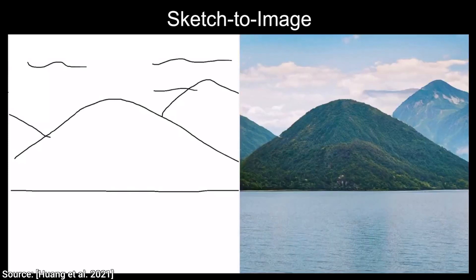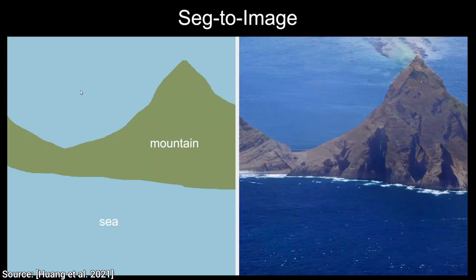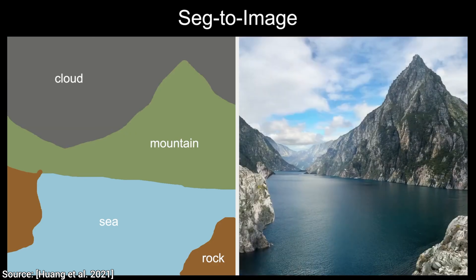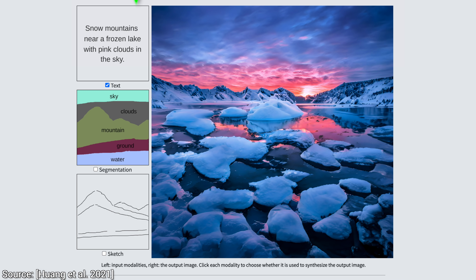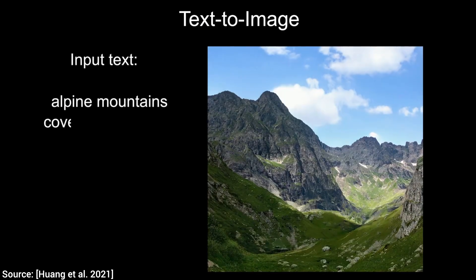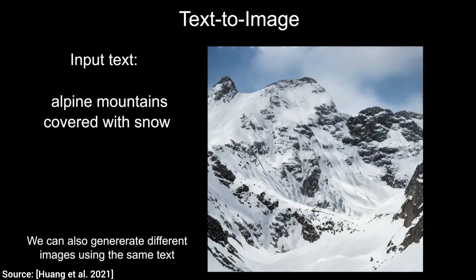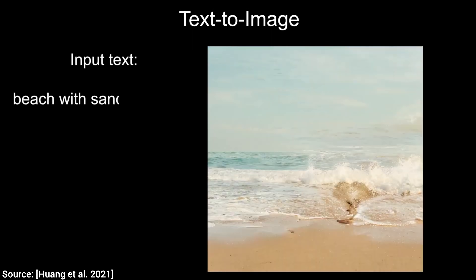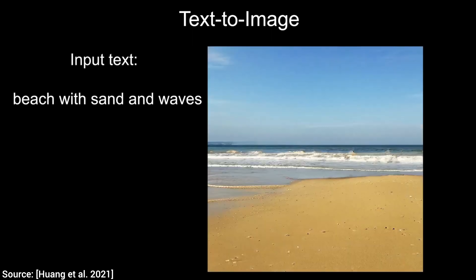But this is not image generation of any kind — no, this is different. For instance, we can write a description and the appropriate image comes out: snowy mountains, pink cloudy sky. We can give it our direction. Make no mistake, this is fantastic, but this has been done before, so nothing new here. Yet.